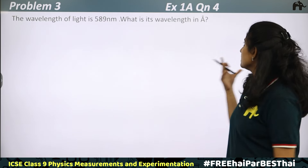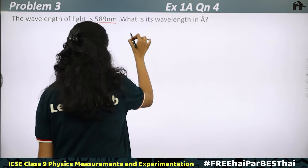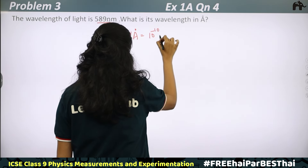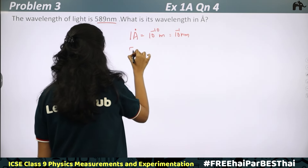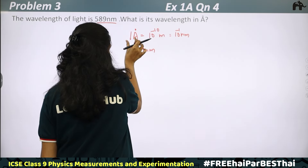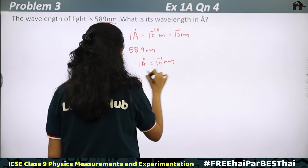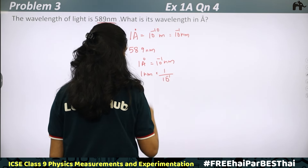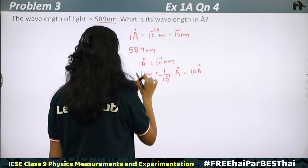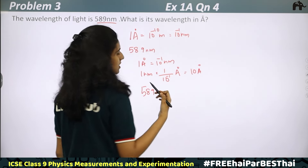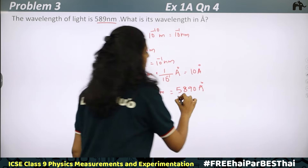Exercise 1A, Question 4: The wavelength of light is 589 nm. What is its wavelength in angstroms? Since 1 Å = 10⁻¹ nm, then 1 nm = 10 Å. Therefore, 589 nm = 589 × 10 Å = 5890 Å.